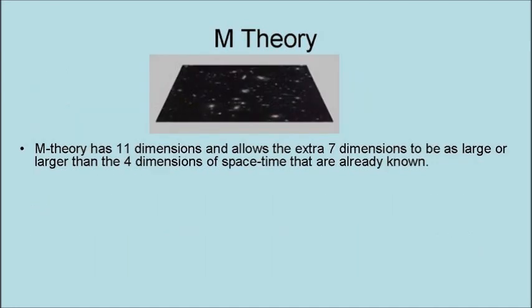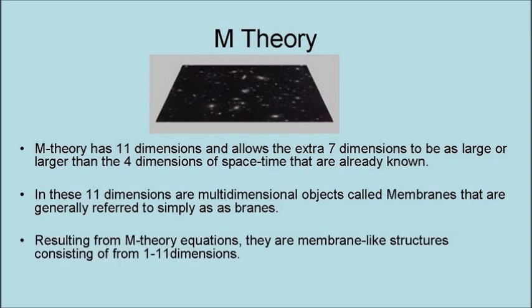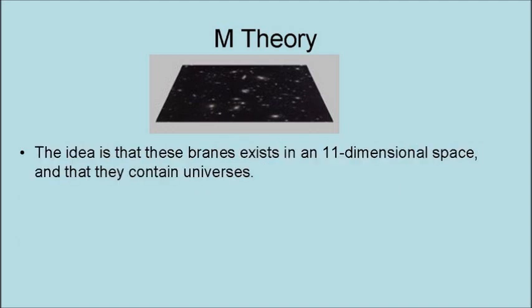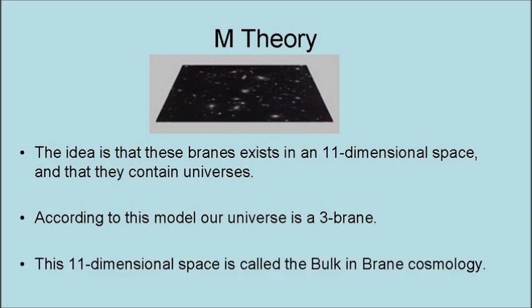M-theory has 11 dimensions and allows the extra seven dimensions to be as large or larger than the four dimensions of space-time that are already known. In these 11 dimensions are multi-dimensional objects called membranes that are generally referred to simply as branes. Resulting from M-theory equations, they are membrane-like structures consisting of from 1 to 11 dimensions. The idea is that these branes exist in an 11-dimension space and that they contain universes. According to this model, our universe is a three-brane.